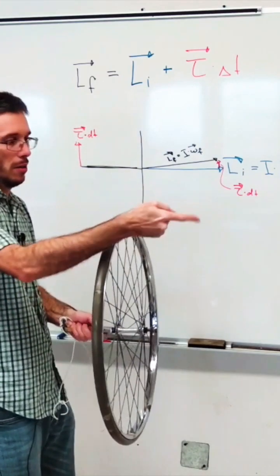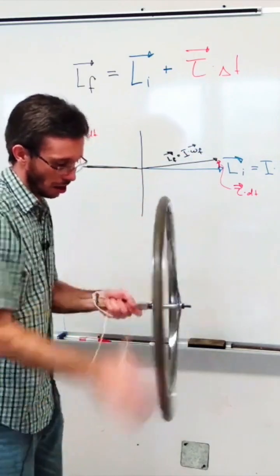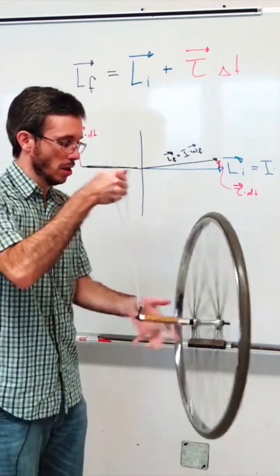So let's see, according to this, my wheel should be spinning in this direction. And it does.